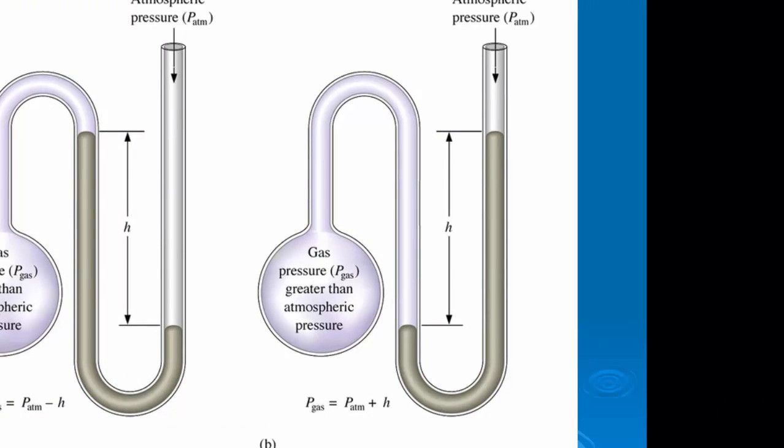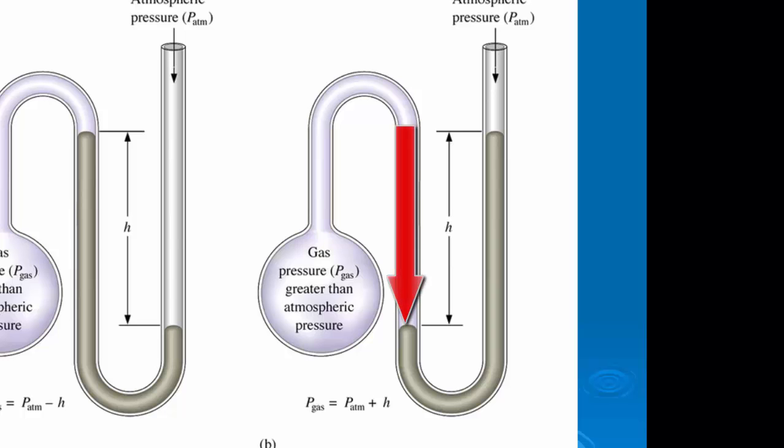Likewise, over here, if the gas has greater pressure than the atmosphere, it will push the mercury more than the atmosphere will. And so the difference in height, then, is added to the atmospheric pressure, because that's the pressure of the gas. It's more than atmospheric pressure.